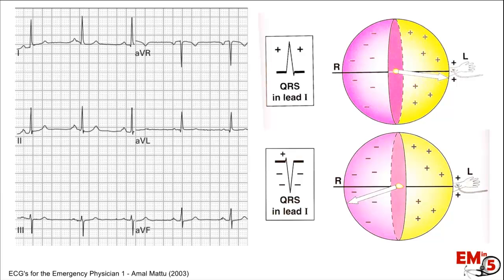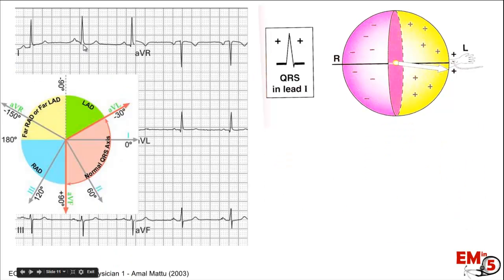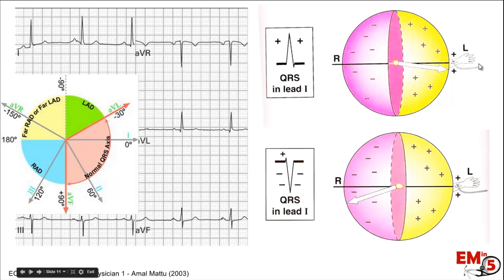Let's talk about how to actually measure the QRS axis. We start by looking at two leads: leads 1 and AVF. Lead 1 is the measurement between the electrodes on the right arm and the left arm, with positive being towards the left. In this example, we have a positive wave in lead 1 — a positive upward wave — meaning it goes on the left side, or positive side, of lead 1. If this wave is negative, it goes on the right side.